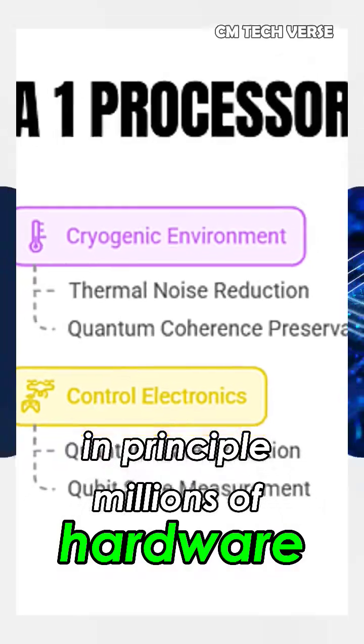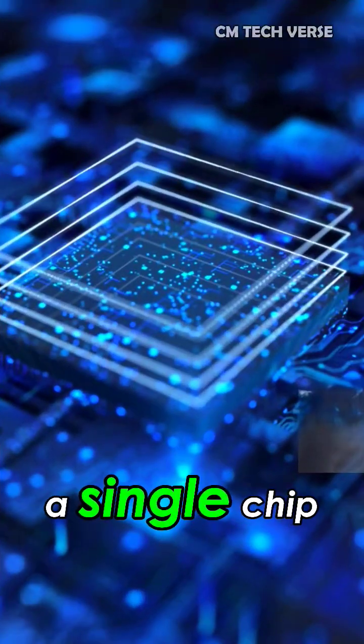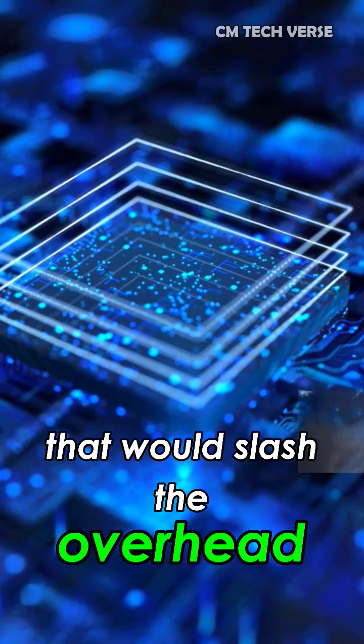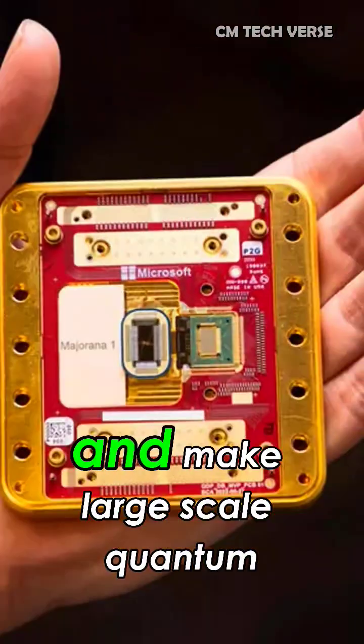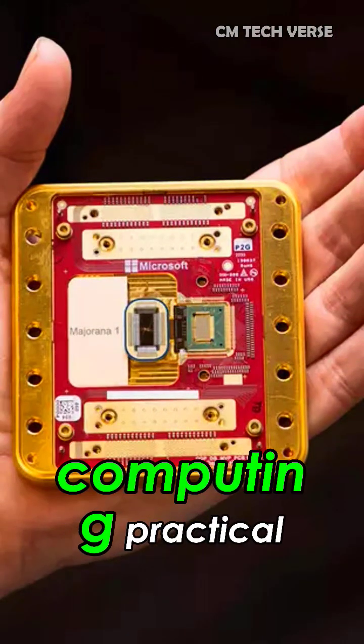In principle, millions of hardware-protected qubits could fit on a single chip. That would slash the overhead needed for error correction and make large-scale quantum computing practical.